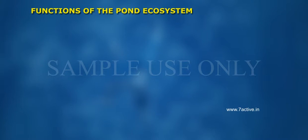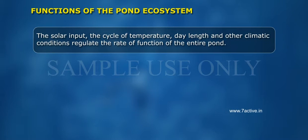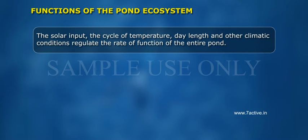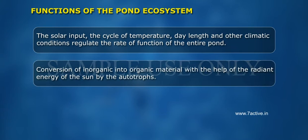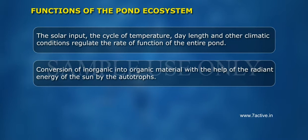Functions of the pond ecosystem: The solar input, the cycle of temperature, day length, and other climatic conditions regulate the rate of functions of the entire pond. Autotrophs convert inorganic material into organic material with the help of radiant energy from the sun.